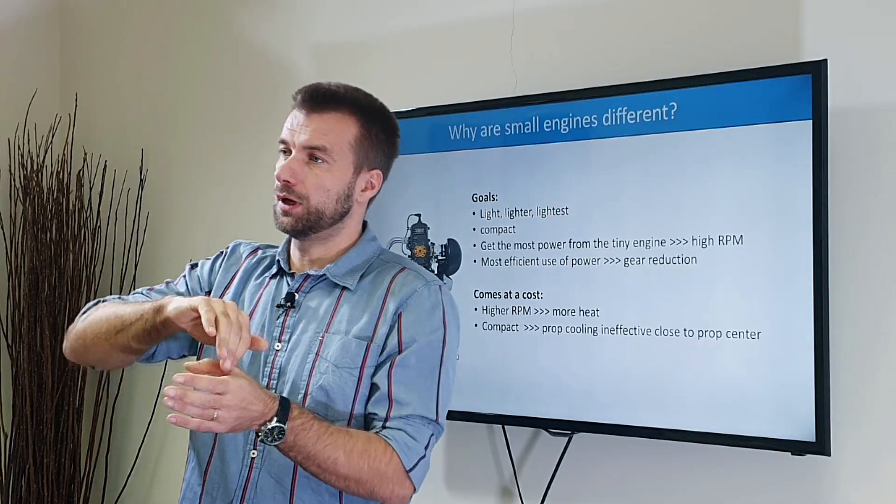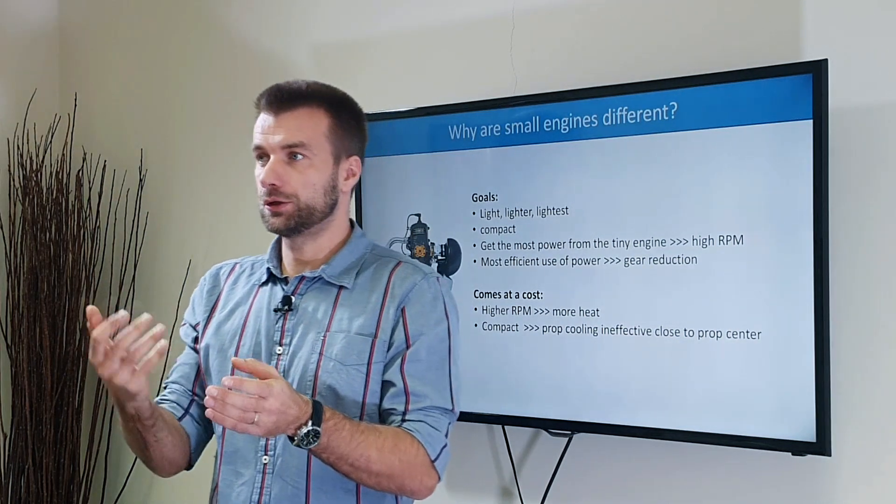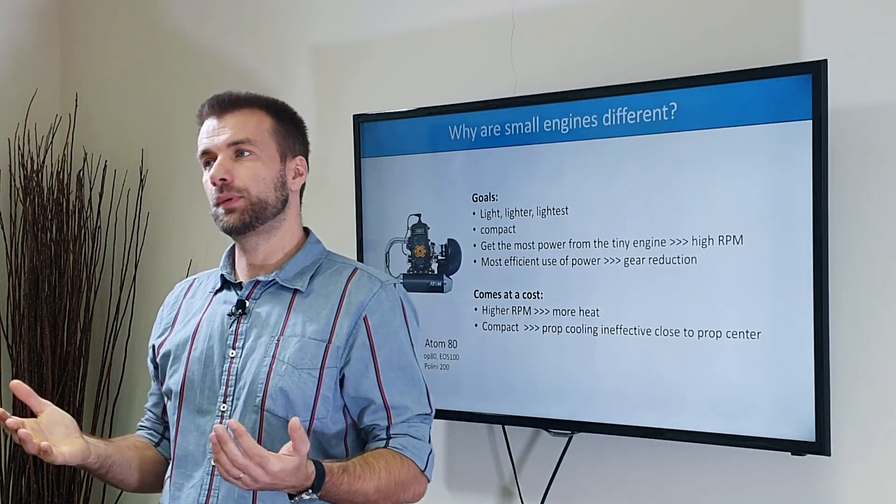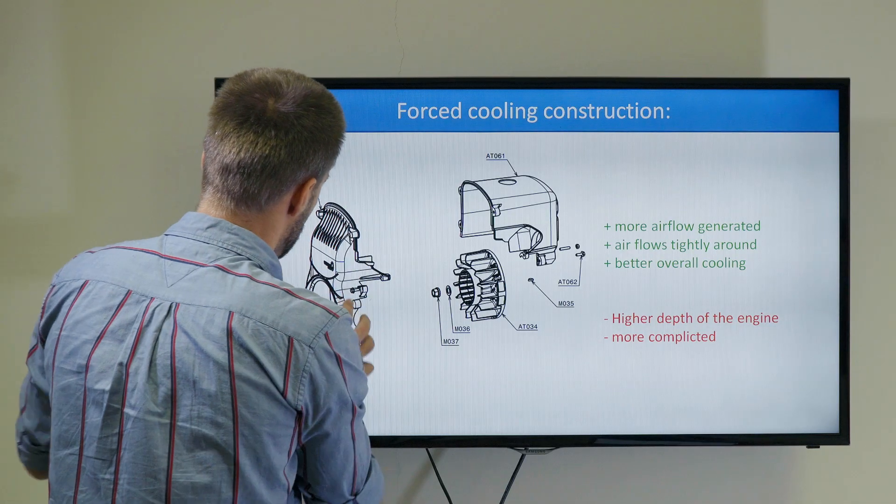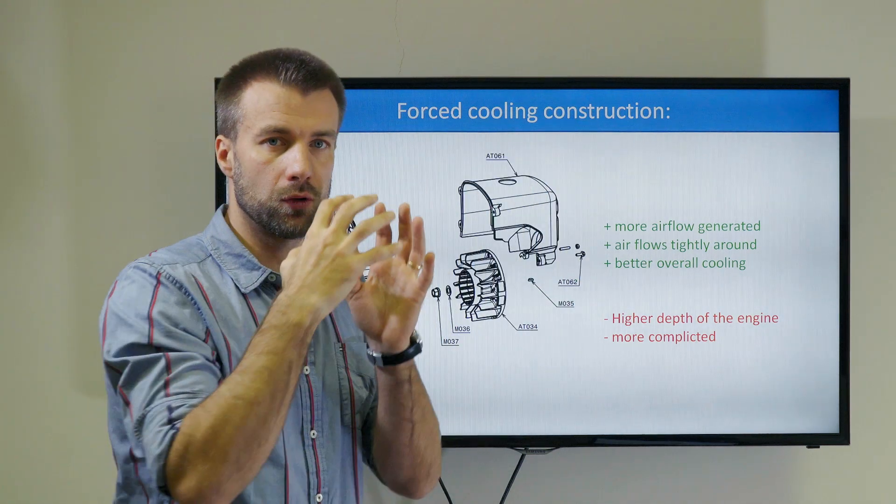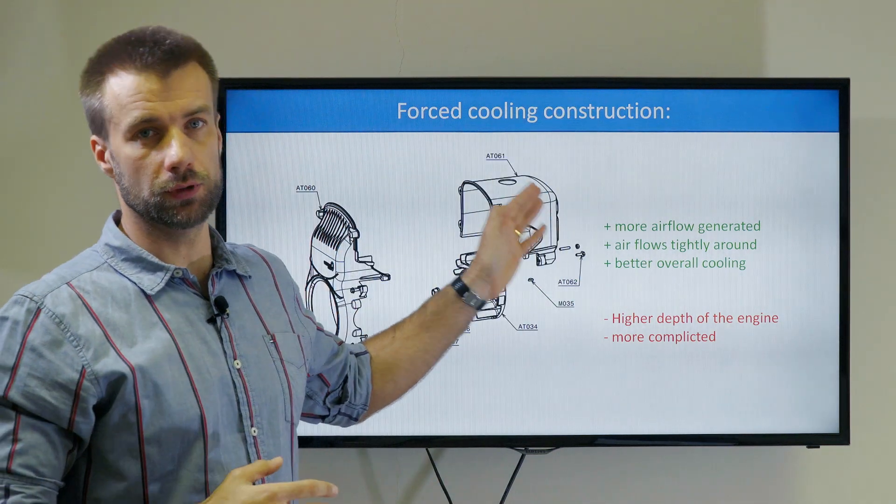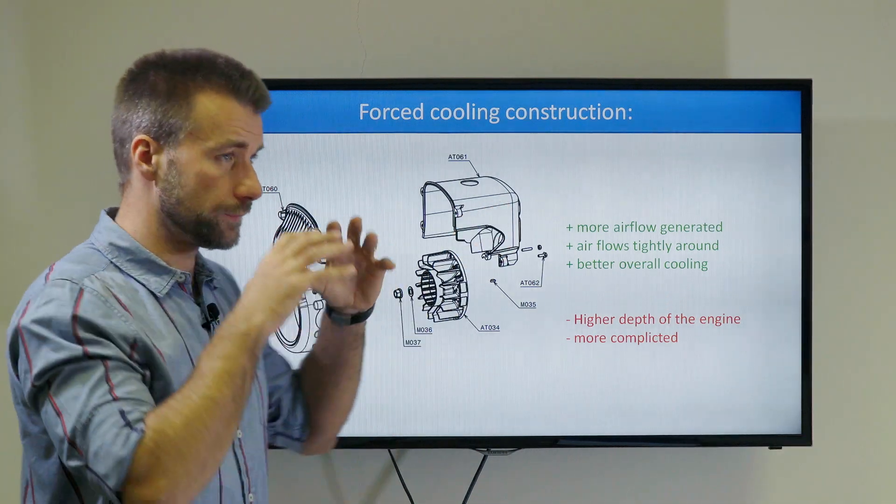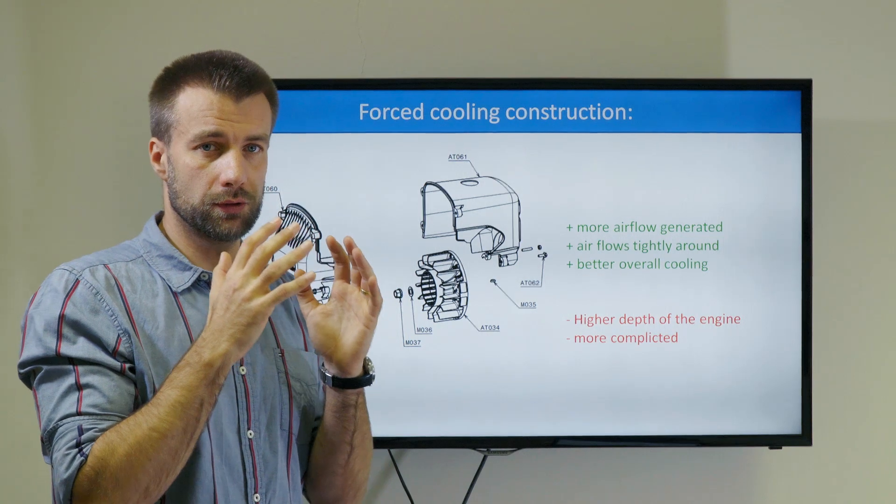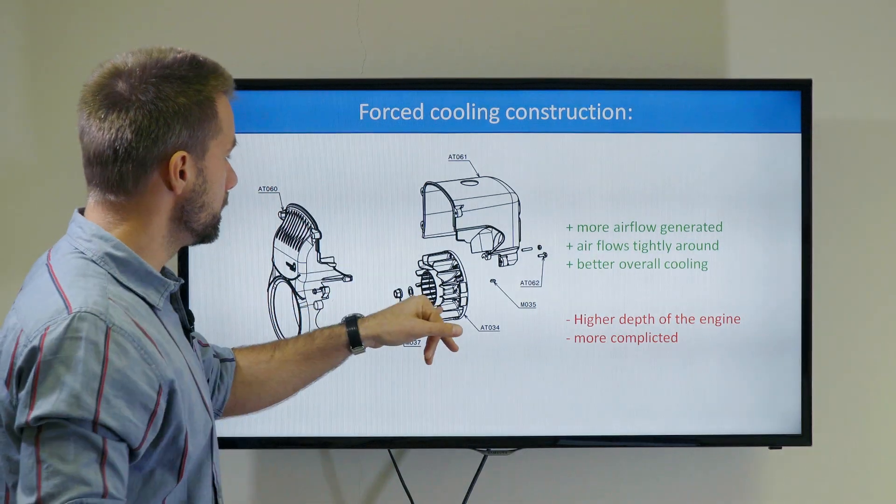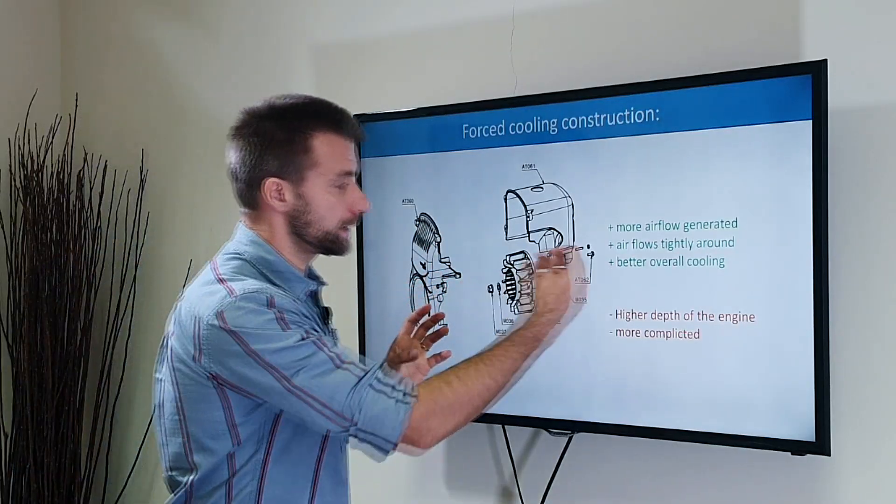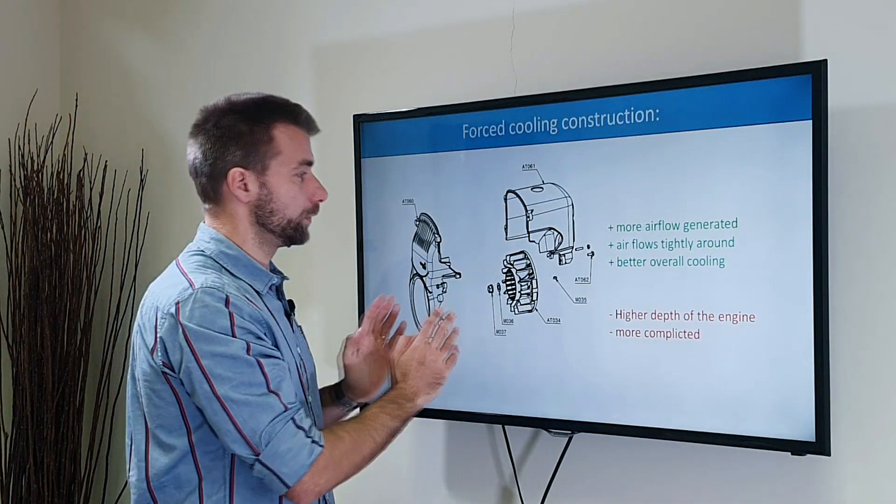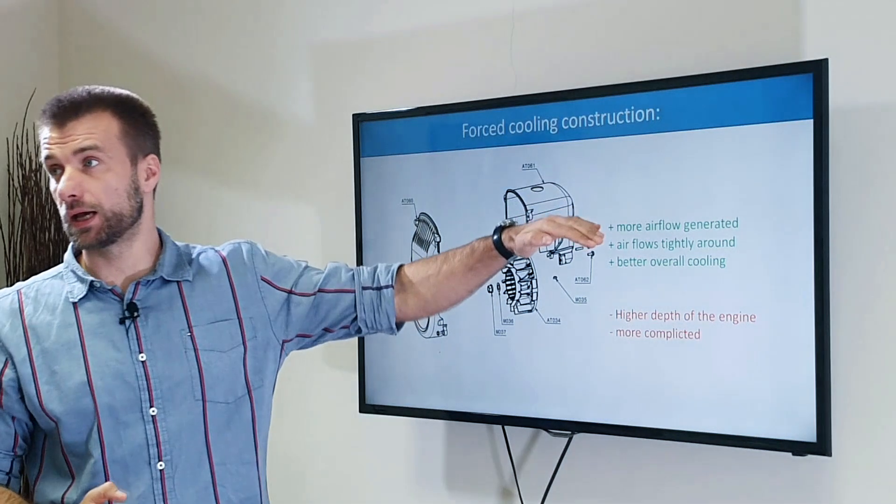That means you need to improve the system. The existing system is relying on a cooling shroud and prop-generated airflow. The simplest way to improve that is forced cooling. Basically these are the parts for the Atom 80 forced cooling. This is a plastic case that encloses the whole engine, an improved cooling shroud. It forces the air to flow directly and very tightly around the cylinder head and cylinder. And this is the replacement of the fins on the propeller. This is the fan attached directly on the shaft on the back side of the engine, generating airflow and blowing it through this little gap in the shroud.